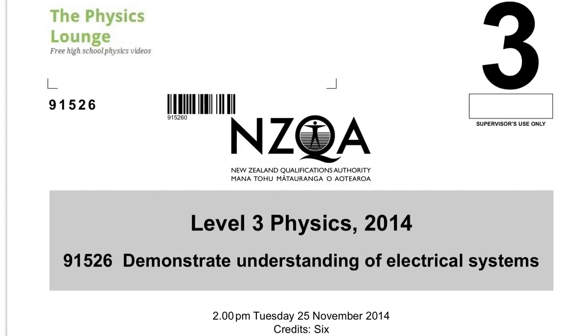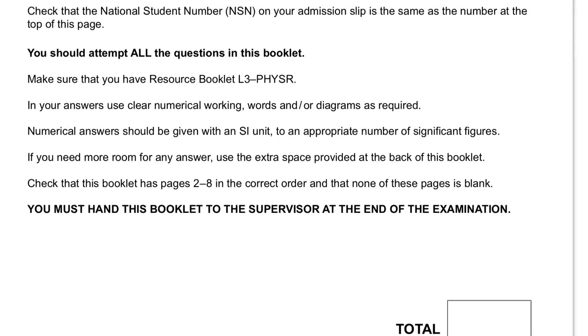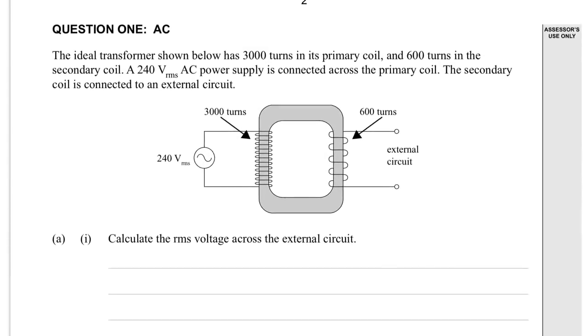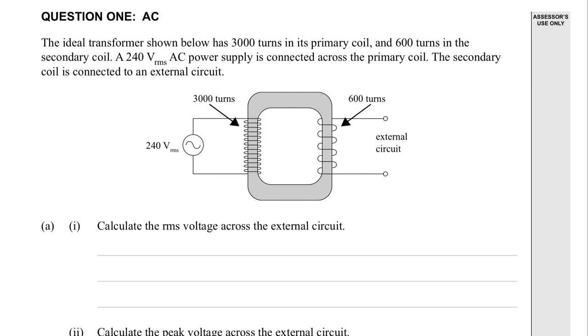So as you can see it's a 2014 level 3 physics electricity paper, question 1. Zooming on down. AC, the ideal transformer shown below.